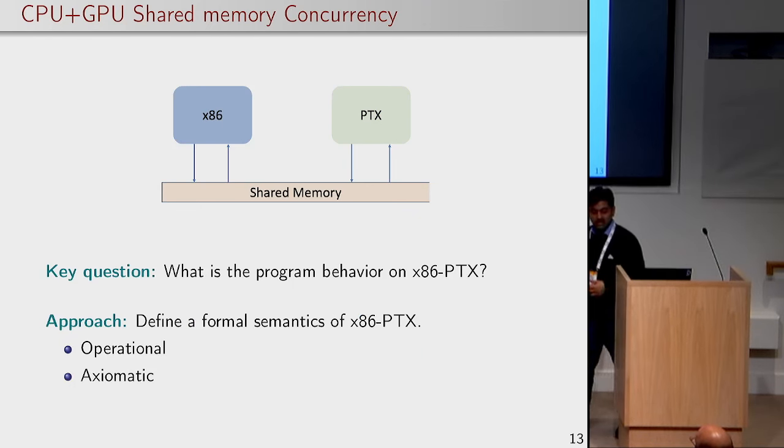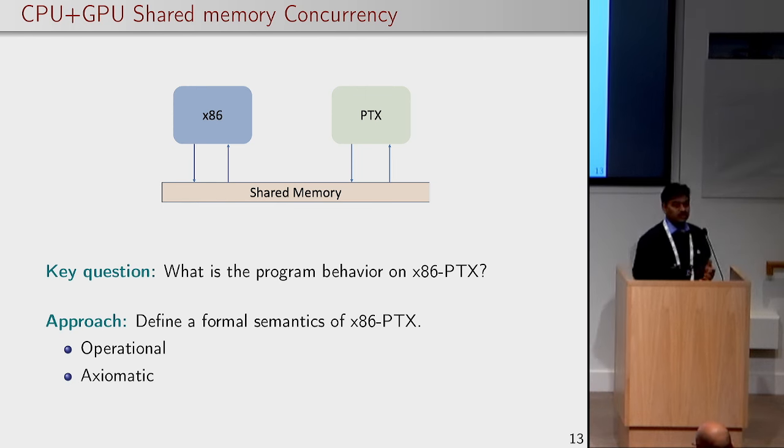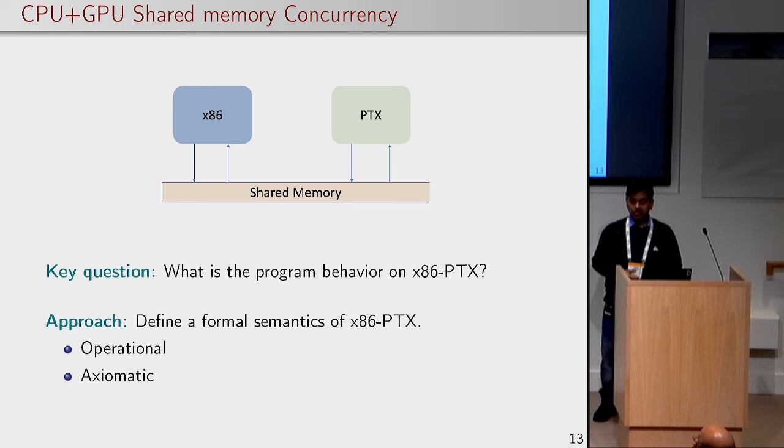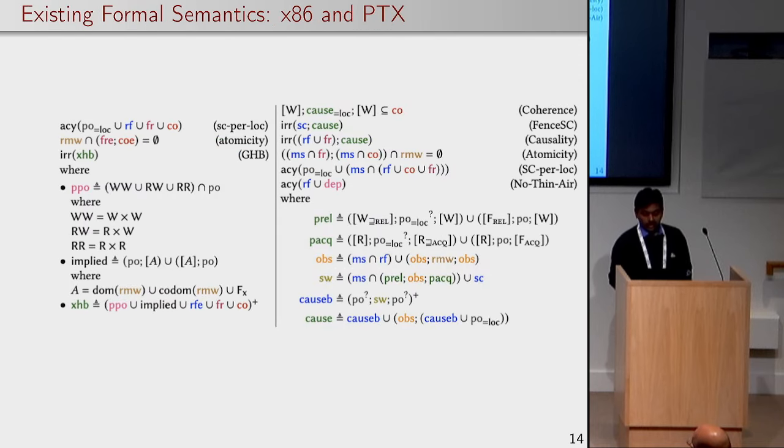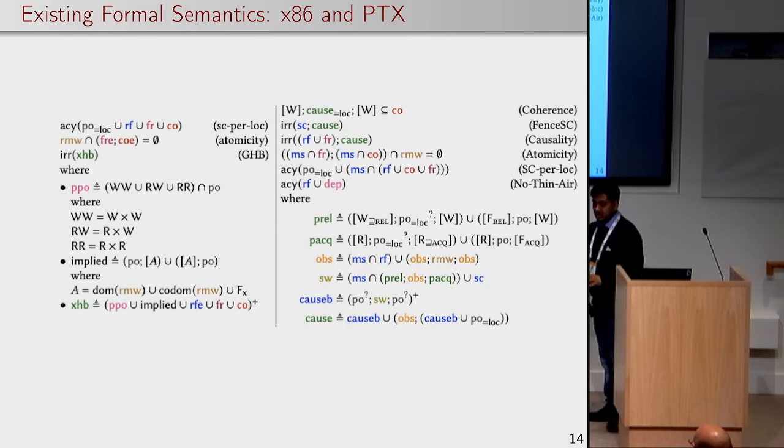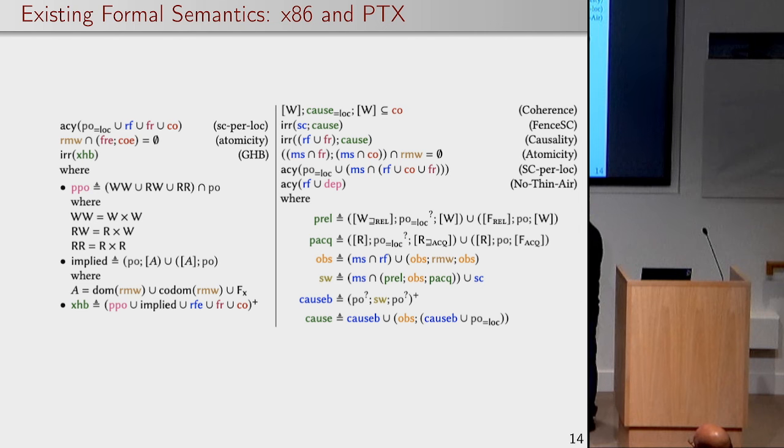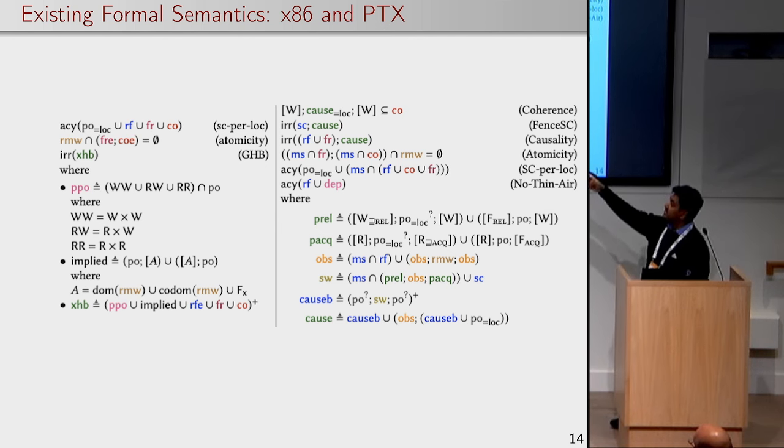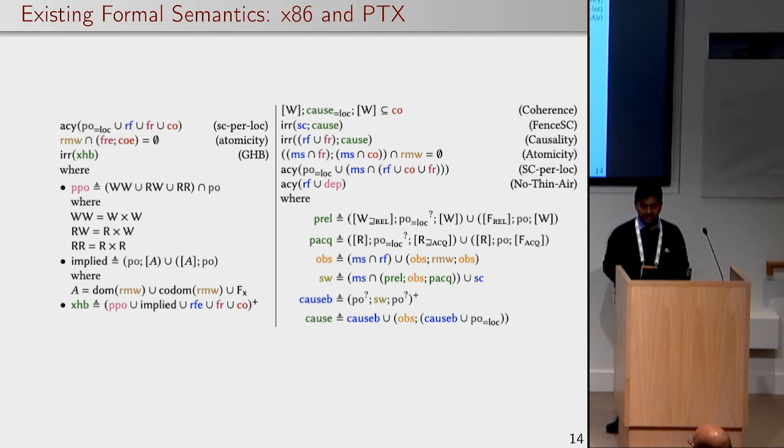With this model we wanted to understand what are the possible programme behaviours we can get on such a system. In that case, the way we do, we wanted to develop some formal semantic models operationally and axiomatically. We started with the existing models which looks like this. I think I need not to explain this, but the left one is x86, the right one is PTX. These are available in respective papers.